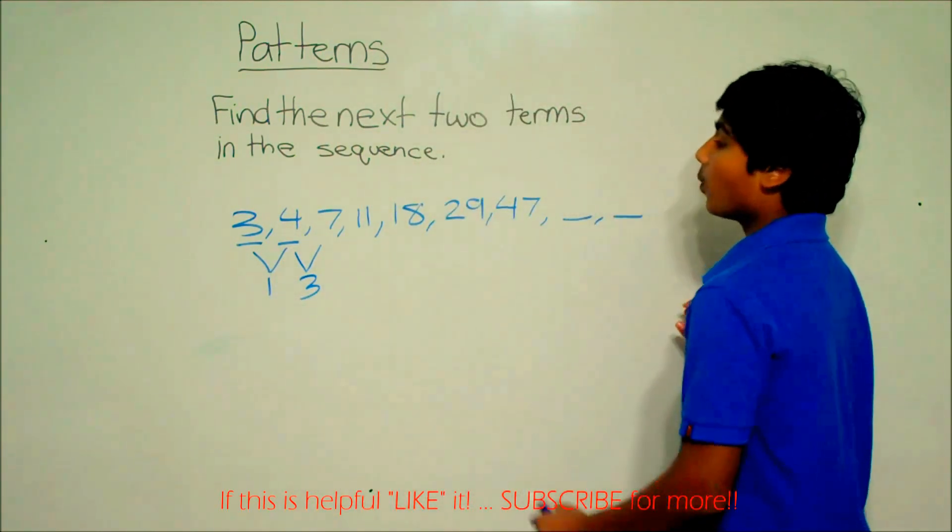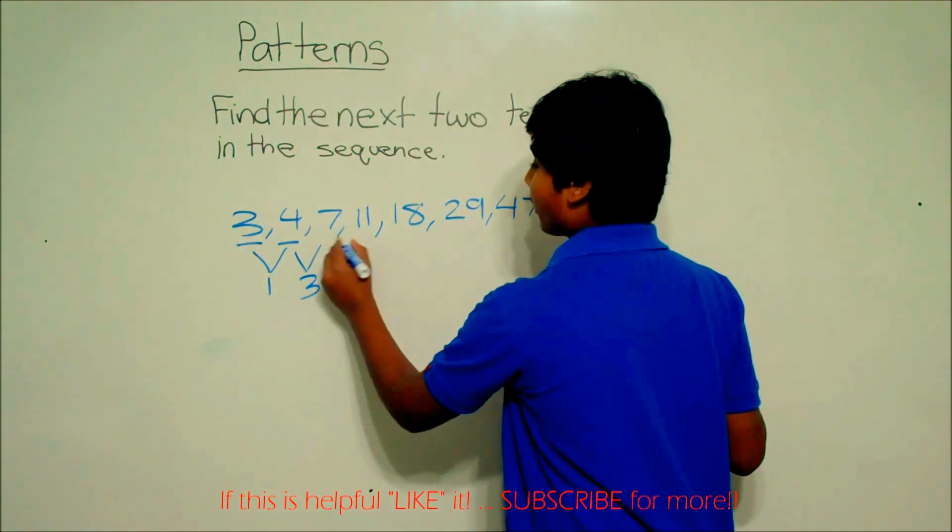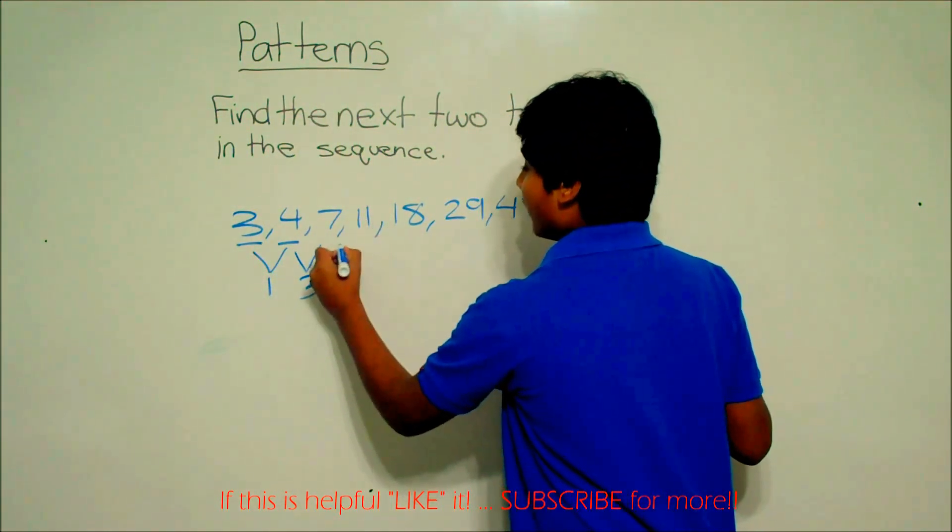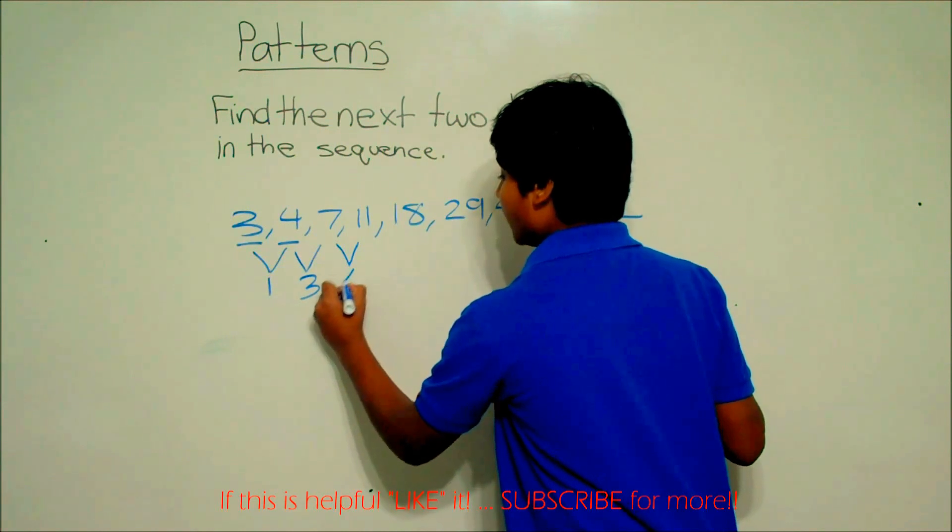For the final one, we're going to look at the third and fourth term, 7 and 11. The difference between 7 and 11 is 4.